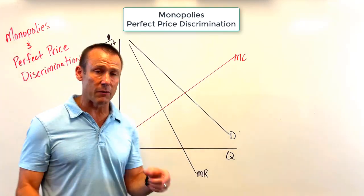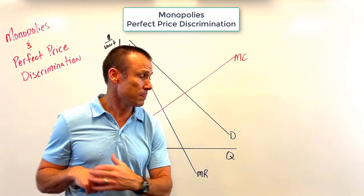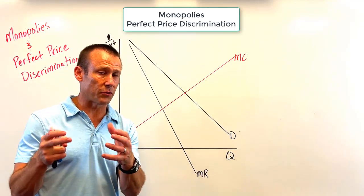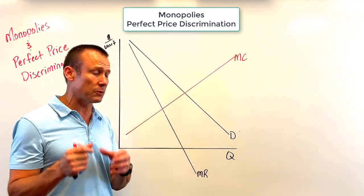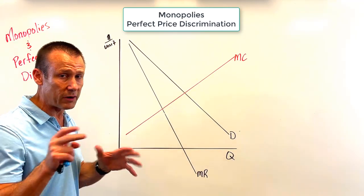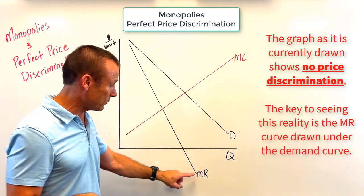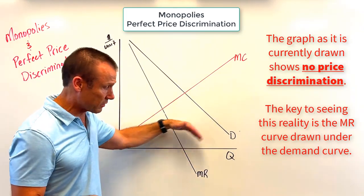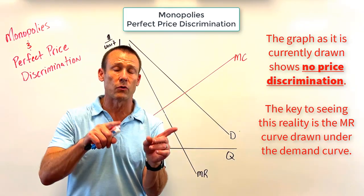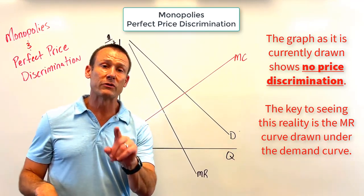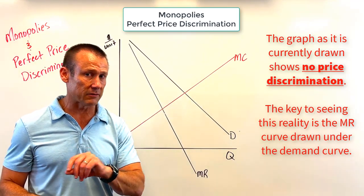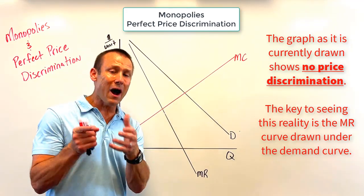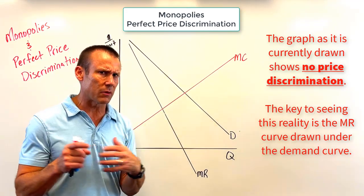Before getting to perfect price discrimination and its implications on the graph, let's talk about no price discrimination. When you look at this graph and see MR broken away from demand at twice the slope, you should immediately recognize that as no price discrimination, which is the default on an AP test.